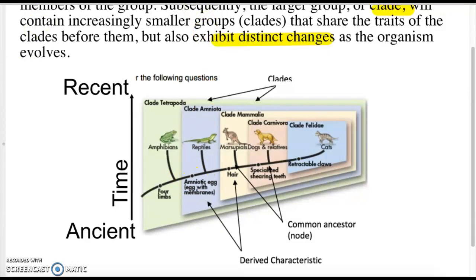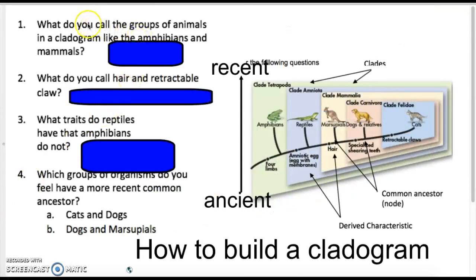On the left side of this cladogram are some questions. What do you call the group of animals in a cladogram, like amphibians, mammals? Well, we call them a clade.